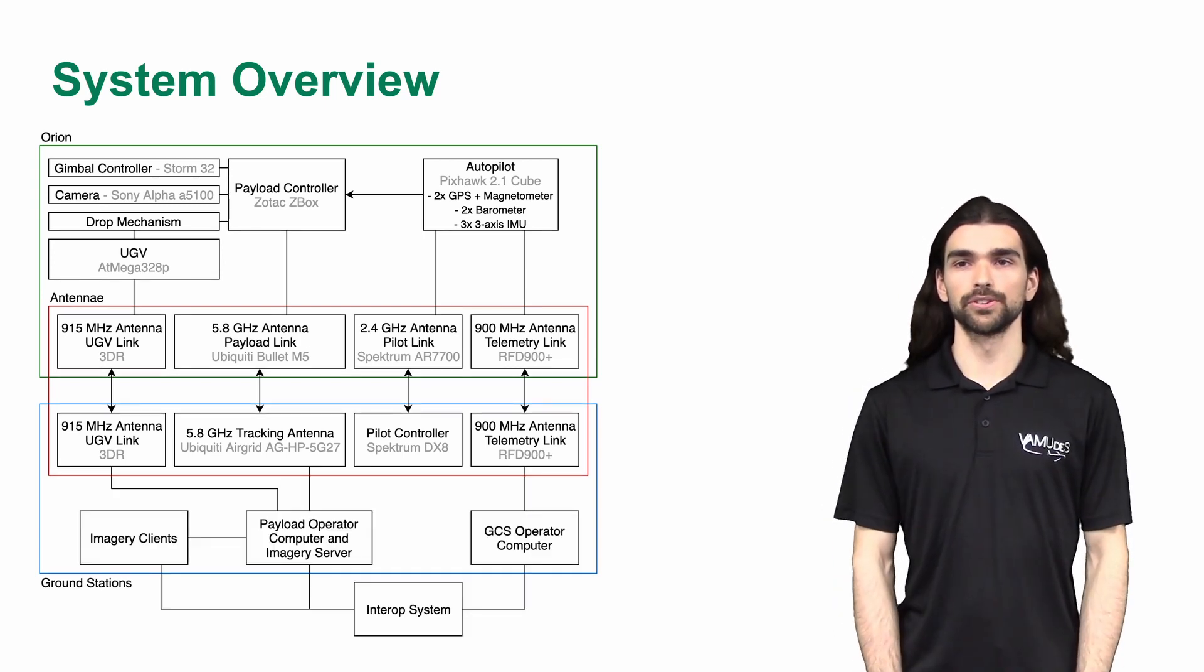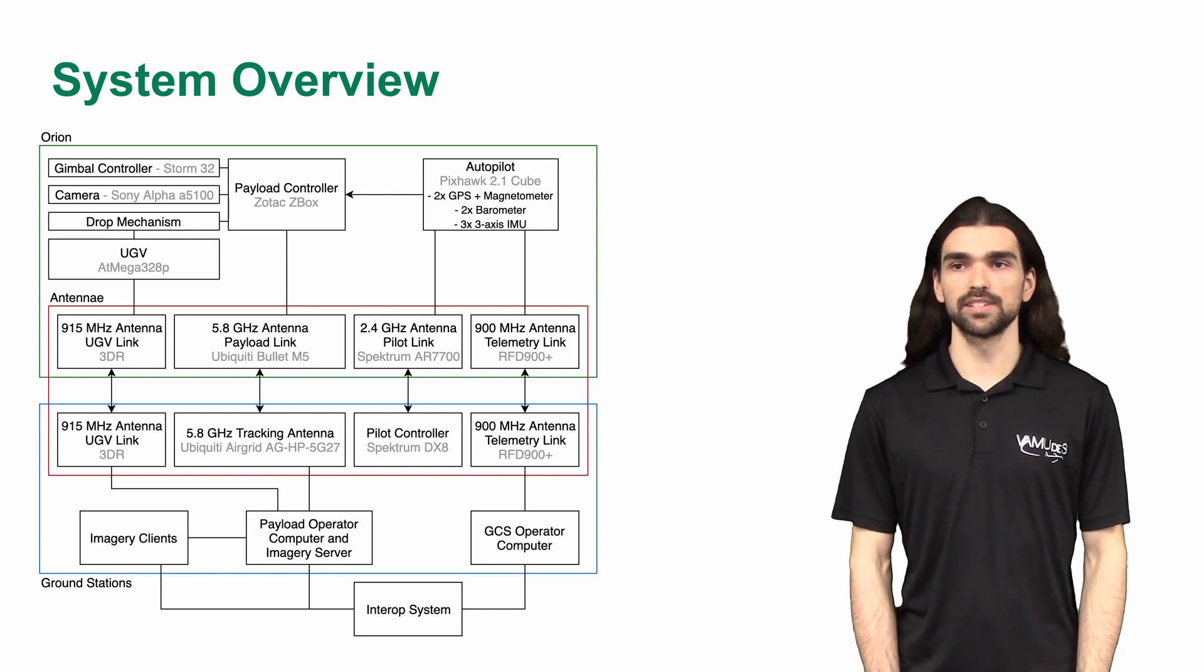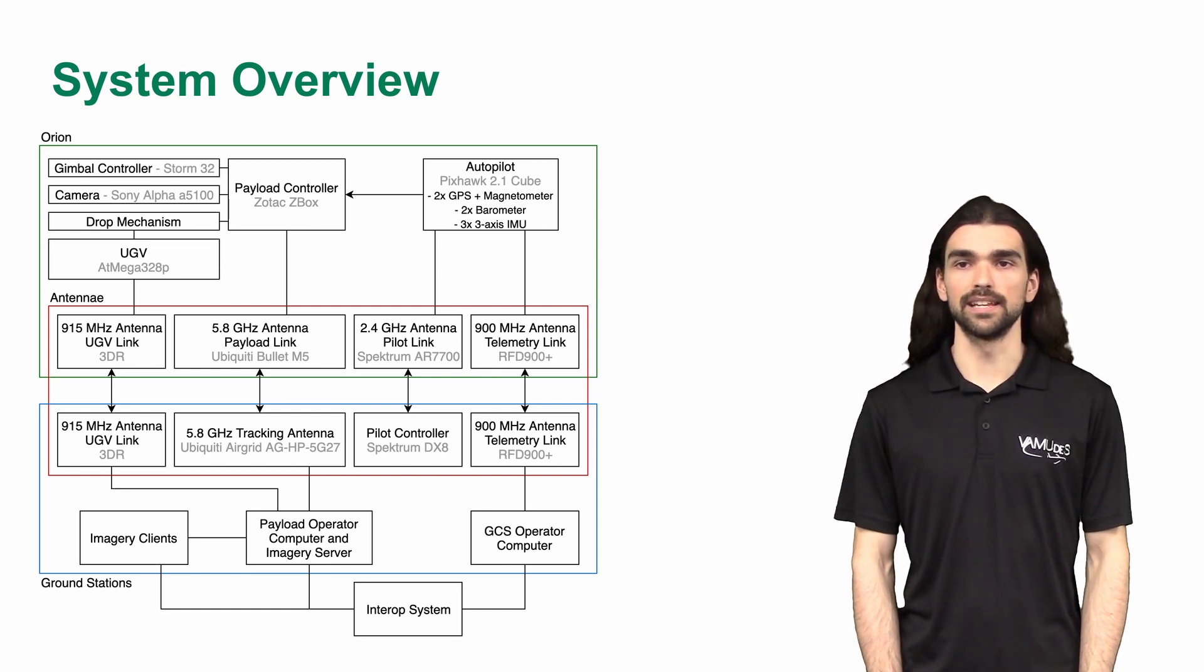All the computers on the ground control station are connected to the interop system. The GCS computer sends the drone's telemetry to the interop. The imagery server receives the images and sends them to the imagery clients. These clients stitch the images, create the map and send them to the interop system.